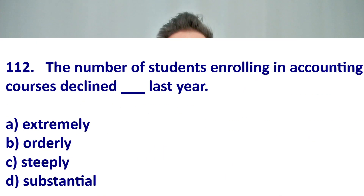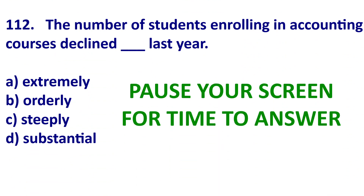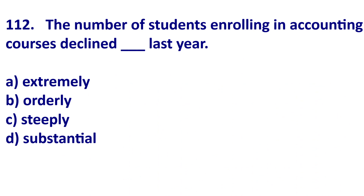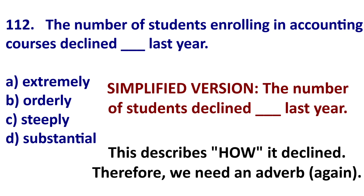Let's look at question 112. Pause your screen if you need time. Once again, simplify. Instead of having all these unnecessary words, let's put it in the simplest terms: the number of students declined blank last year. This is describing how it declined, so we need an adverb.